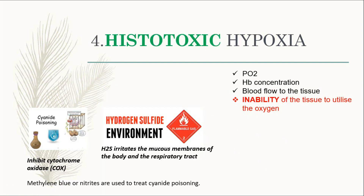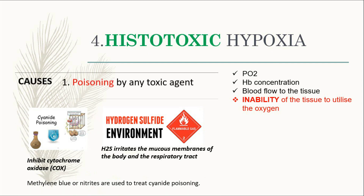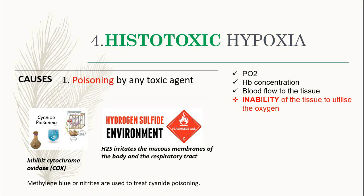Now we are going to the last type of hypoxia, which is histotoxic hypoxia. This type happens when the tissue is unable to use the oxygen. It is caused by poisoning by a toxic agent, such as cyanide poisoning and hydrogen sulfide, which prevent the tissue from utilizing the oxygen. That's why it's called histotoxic hypoxia.